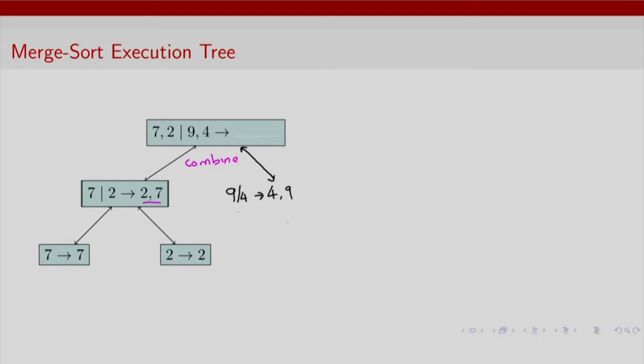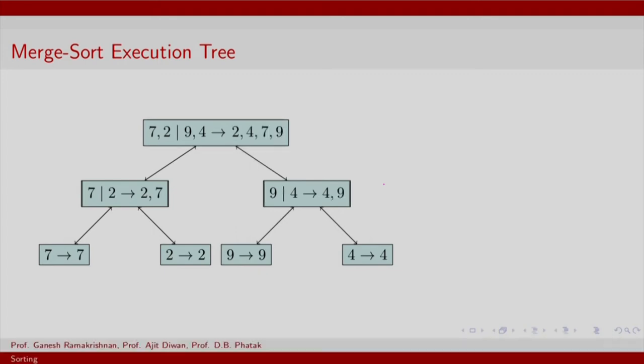What combine will entail is interleaving elements between 2, 7 and 4, 9, which means you will have 2 followed by 4 followed by 7 followed by 9. You are not really bothered with comparisons within each group, but you are concerned about comparisons between selected elements in the left and right subgroups respectively. So this is complete execution of merge sort for this example. You get a sorted list.